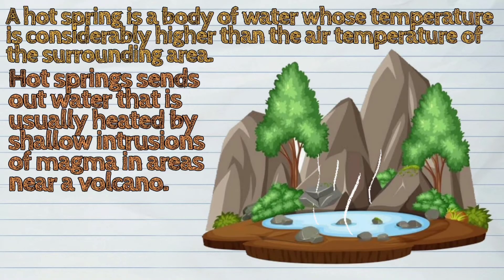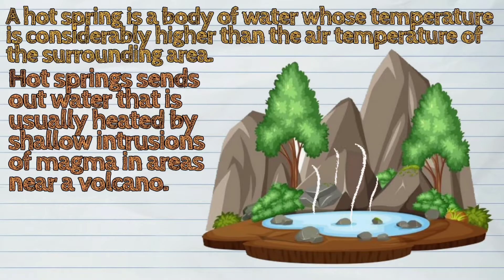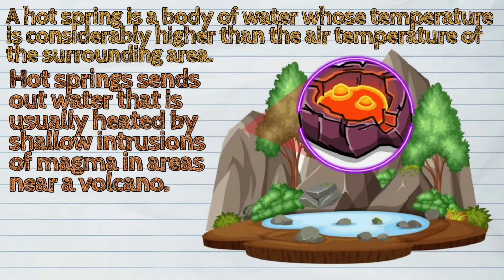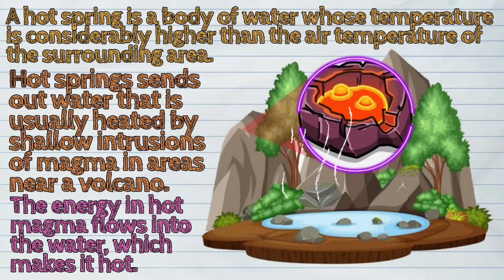Hot springs send out water that is usually heated by shallow intrusions of magma in areas near a volcano. The energy in hot magma flows into the water, which makes it hot. This energy is called heat.